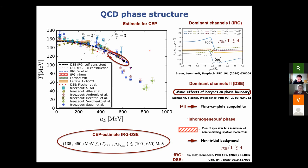Above μ_B/T ≈ 4, we need to improve our computations. But I would say stay tuned — I think in the next couple of years, you will get a quantitative estimate from our functional methods groups for the location of the critical endpoint. And by location I mean the point from which something non-trivial happens: critical endpoint, Lifshitz point, non-trivial phases, and so on.